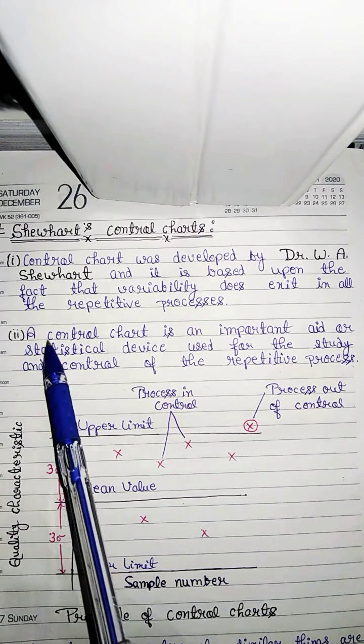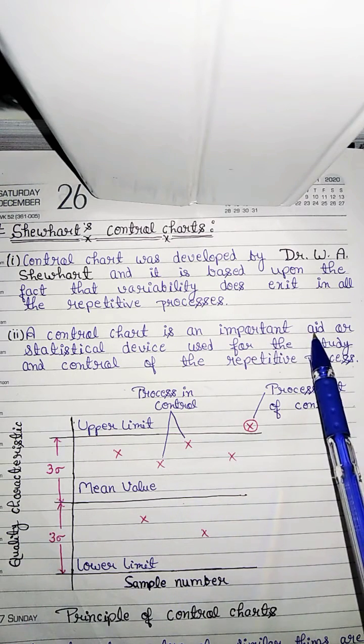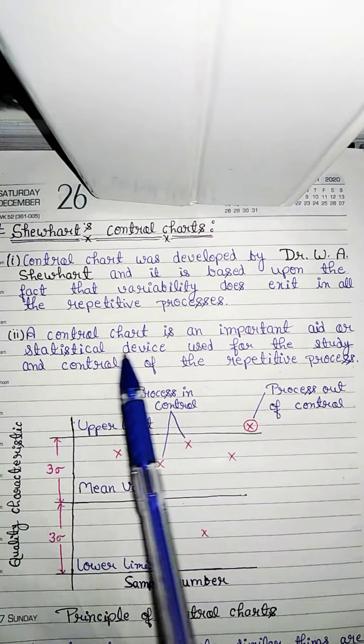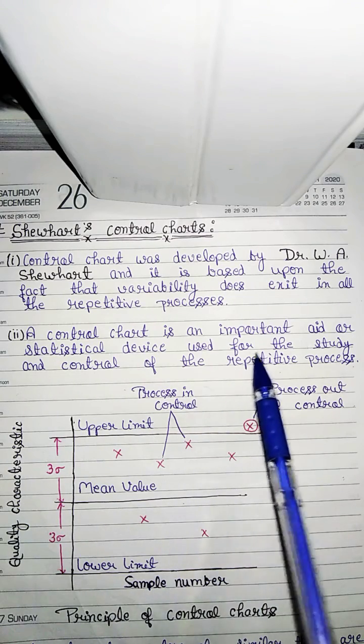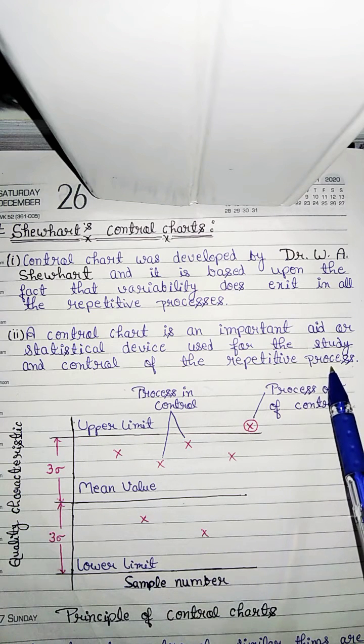Second point is that a control chart is an important statistical device used for the study and control of the repetitive process.